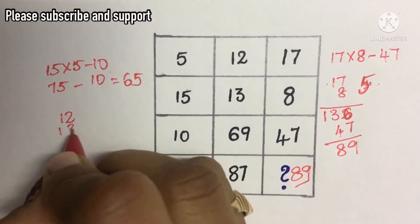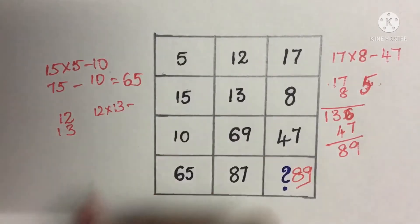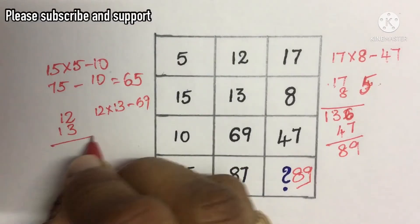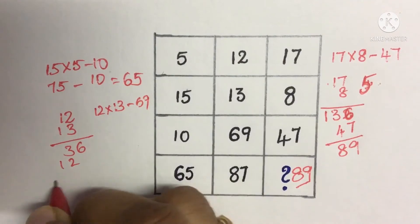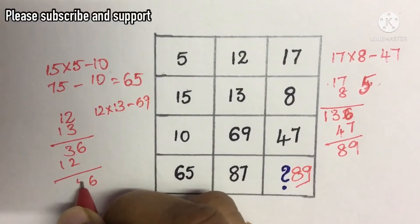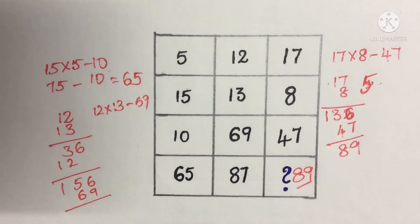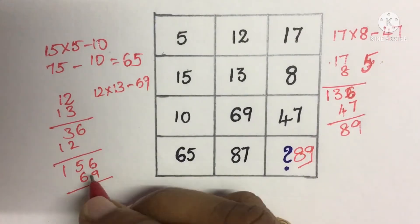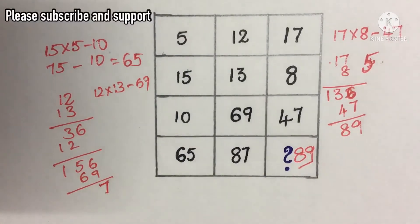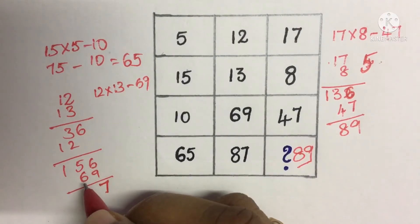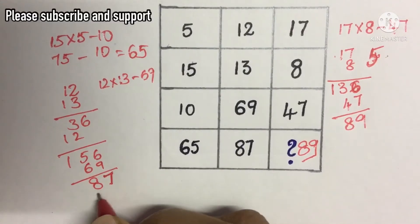Next: 12 × 13 minus 69. 12 × 13 = 156. Then 156 minus 69: 6 minus 9 gives 7 (borrow), 14 minus 6 is 8. So the answer is 87.